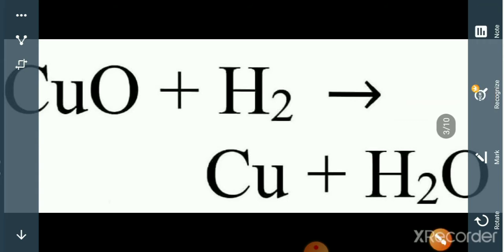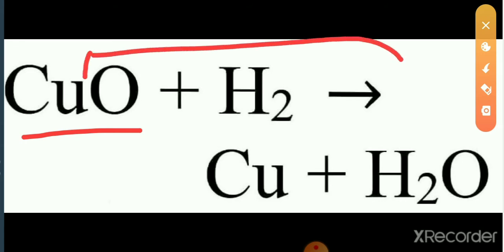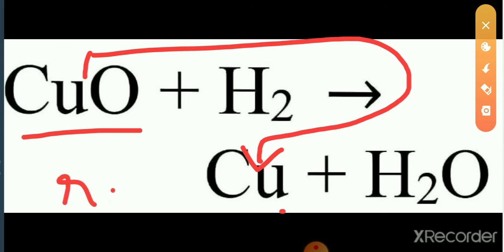Once more: in this reaction, copper oxide on the reactant side has one oxygen atom. But after the reaction, copper loses that oxygen. That means reduction takes place — copper oxide reduces to copper.